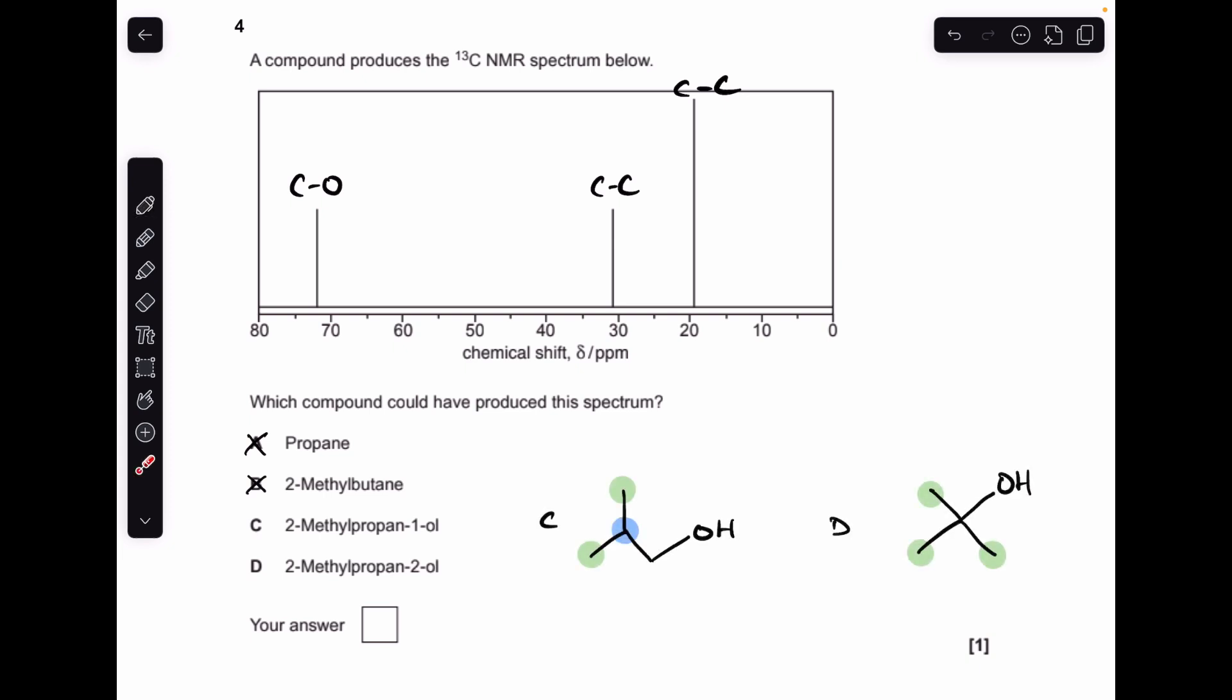So we'll start with 2-methylpropan-1-ol, and all I'm interested in are the C-C single bond environments, because they've both got C single bond O. So you can see in option C, we've got one, two carbon-carbon environments, whereas in option D, we've only got one, so you can see the spectrum's got two of those environments, so the answer was option C.